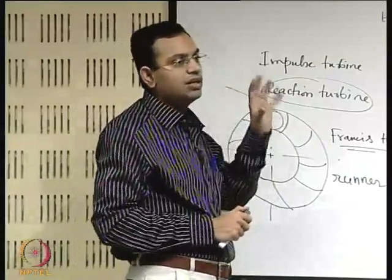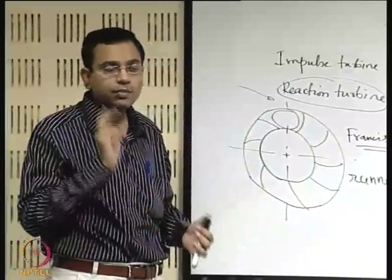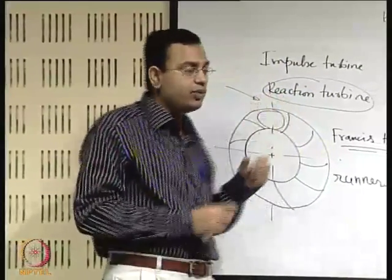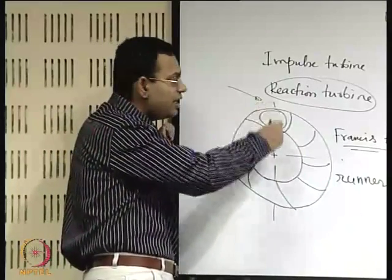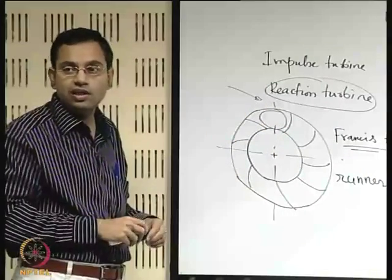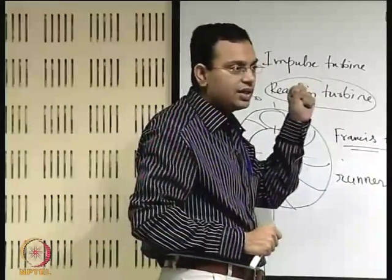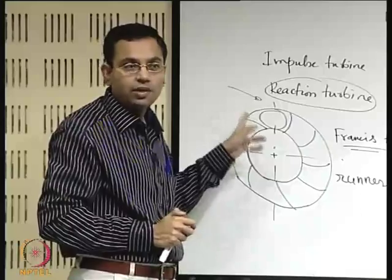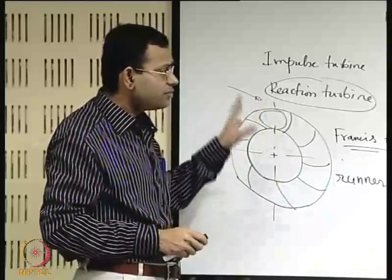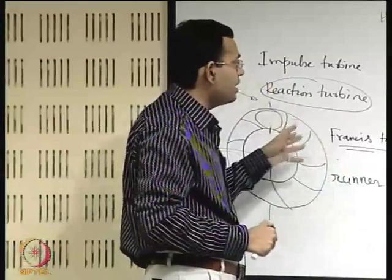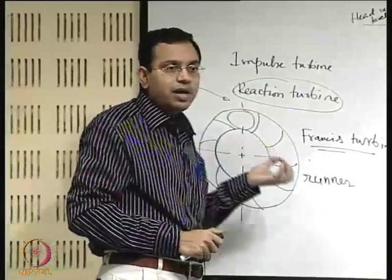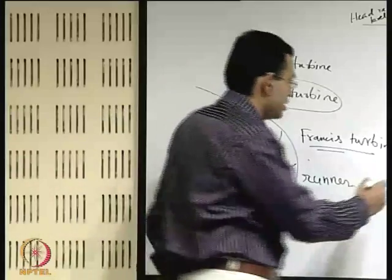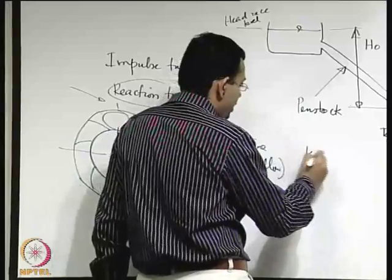The name 'reaction' is somewhat of a misnomer: there cannot be a 100% reaction turbine — there must be at least some impulse of the jet to begin with. There are many types of reaction turbines: the Francis turbine is a radial flow reaction turbine, and there are also axial flow reaction turbines. An example of the latter is the Kaplan turbine.